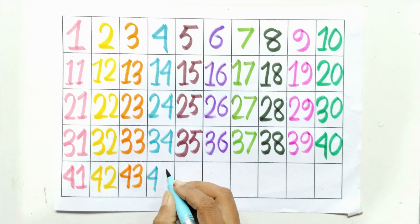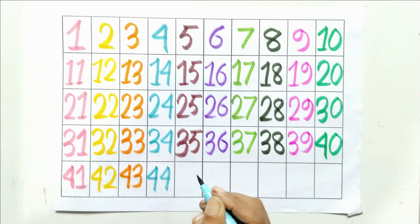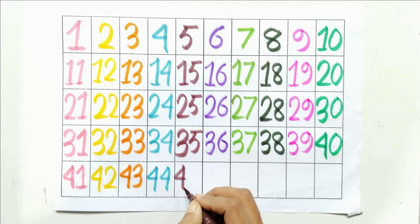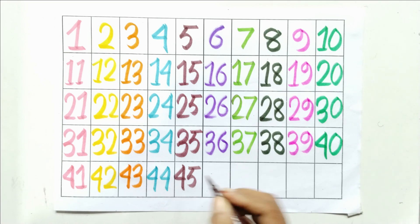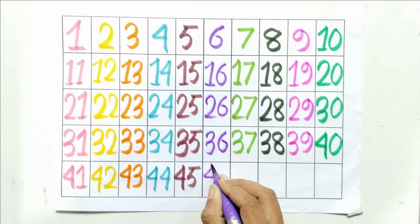Four and four, forty-four. Four and five, forty-five. Four and six, forty-six.